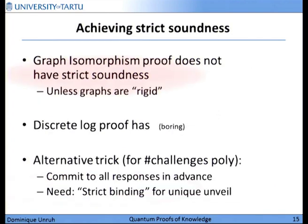There's one remaining problem: how do we get strict soundness? The well-known graph isomorphism proof does not have strict soundness, because there could be several different isomorphisms between the same graphs unless they have a property called rigidity. The typical discrete logarithm proof has this property, however it is rather boring in the quantum setting because we can just compute the discrete logarithm anyway. I don't know any natural candidate that is not boring, but we can make a trick to achieve strict soundness given an existing protocol.